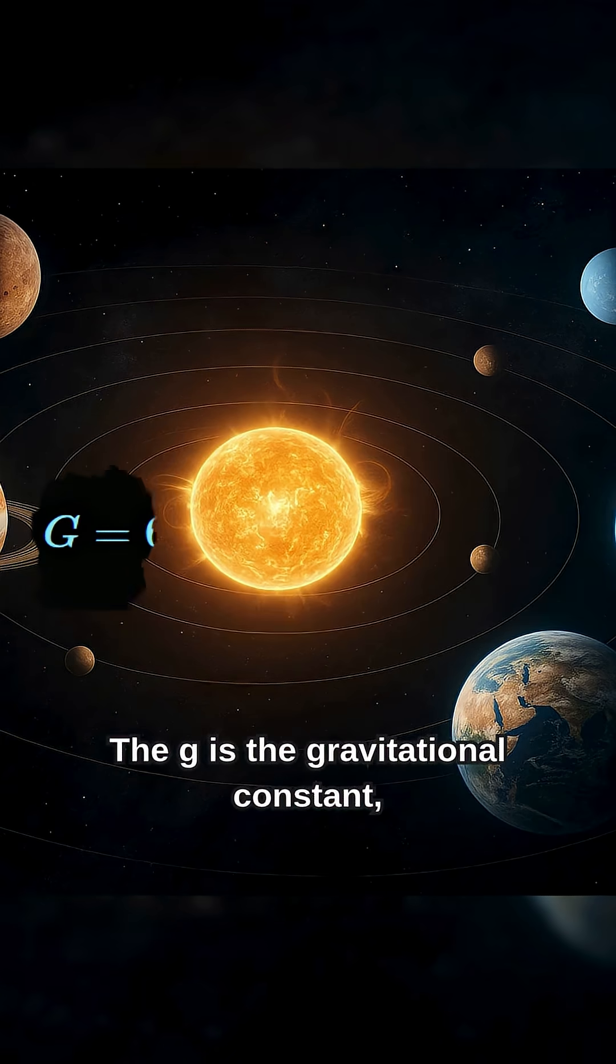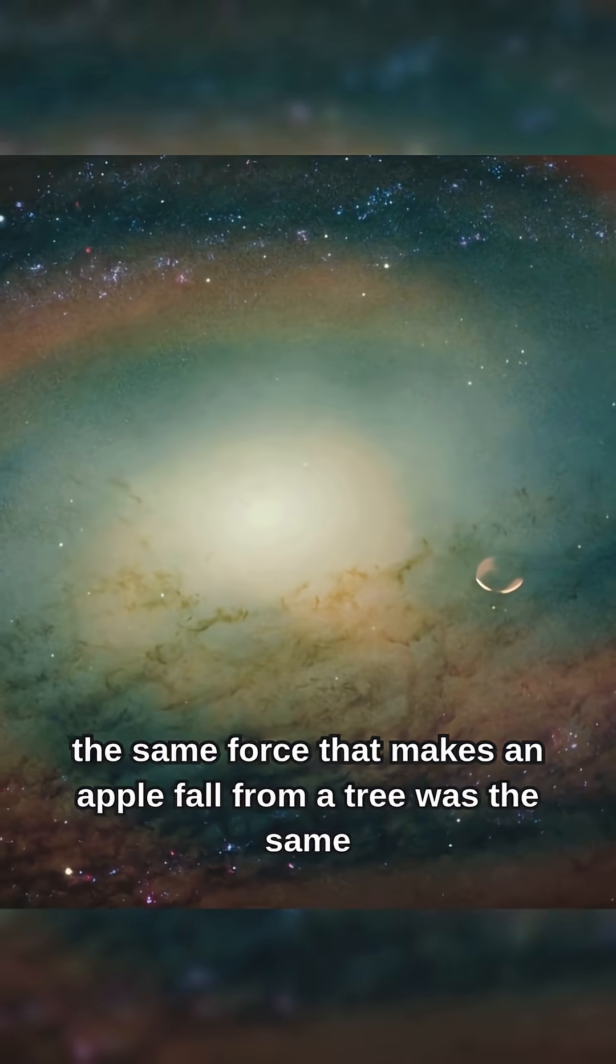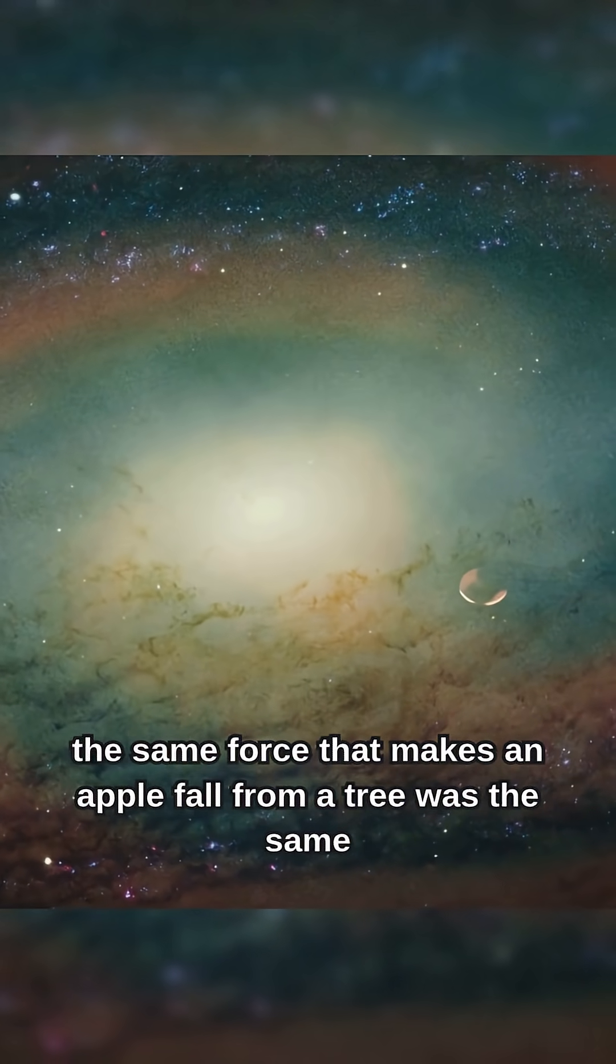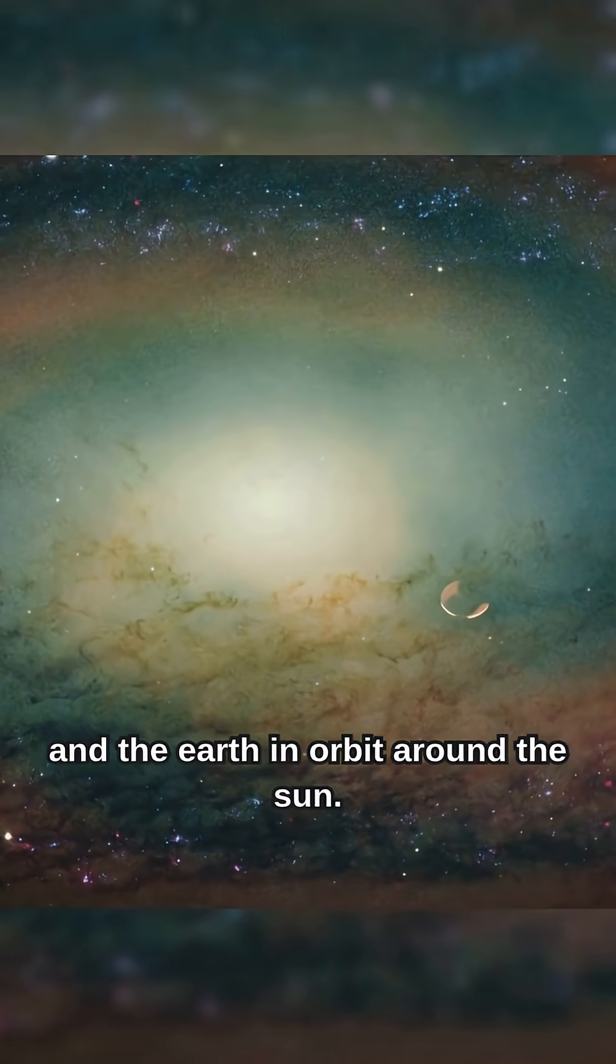The G is the gravitational constant, a number that scales the force. Suddenly, the same force that makes an apple fall from a tree was the same force that keeps the moon in orbit around the earth, and the earth in orbit around the sun.